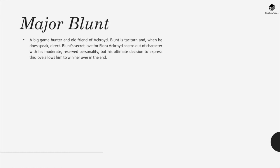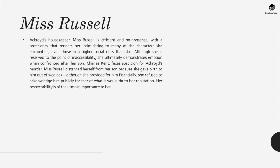Miss Russell, Ackroyd's housekeeper, is efficient and no-nonsense, with a proficiency that renders her intimidating to many of the characters she encounters, even those in a higher social class than she. Although she is reserved to the point of inaccessibility, she ultimately demonstrates emotion when confronted after her son Charles Kent faces suspicion for Ackroyd's murder. Miss Russell distanced herself from her son because she gave birth to him out of wedlock. Although she provided for him financially, she refused to acknowledge him publicly for fear of what it would do to her reputation. Her respectability is of the utmost importance to her.